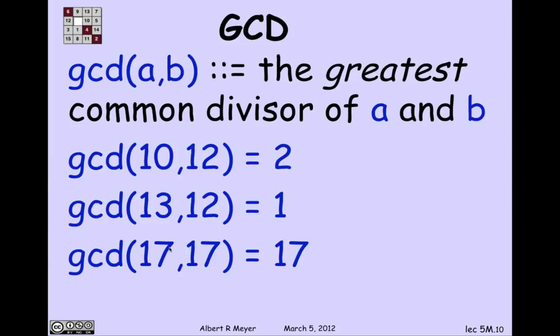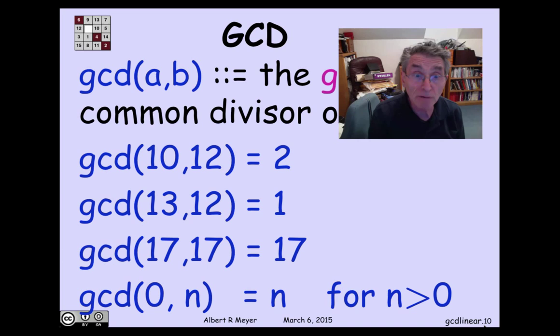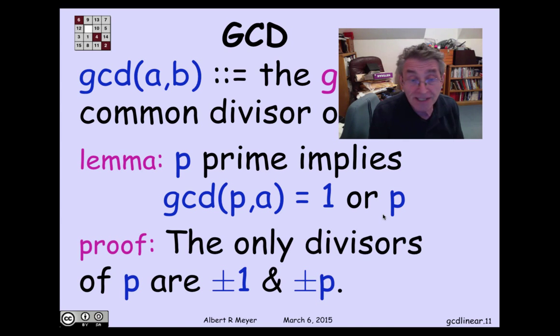The GCD of 17 and 17 is 17. That's a general phenomenon. The GCD of n and n is always n. The greatest common divisor of 0 and n is equal to n for any positive n. That's because everything is a divisor of 0, and it means the GCD of 0 and n is simply the greatest divisor of n, which is, of course, n by itself. One final fact to set things up for the next segment is to think about the GCD of a prime and a number. And it's either 1 or p. The reason is that the only divisors of a prime are plus minus 1 and plus minus p. So if p divides a, the GCD is p. And otherwise, the GCD is 1.